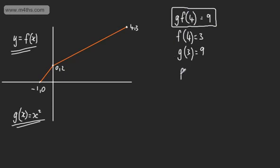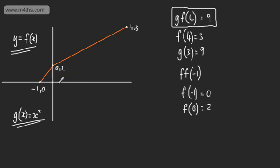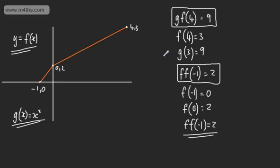So I've fed in −1, got 0, then put 0 back in and got 2, giving f of f of −1 = 2. While forming composite functions algebraically is generally better, sometimes f(x) is only given as a graph — not as an equation — and you need to work it out from there step by step.